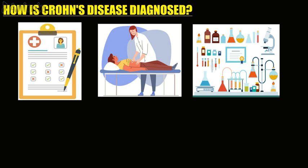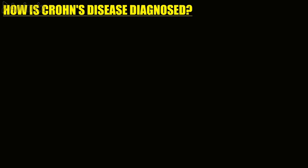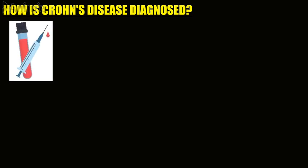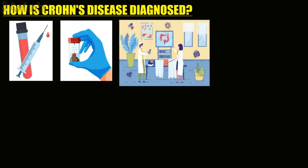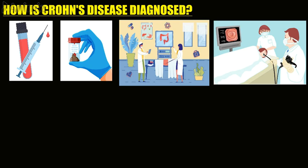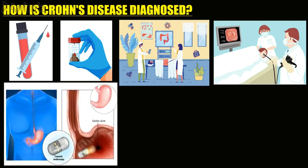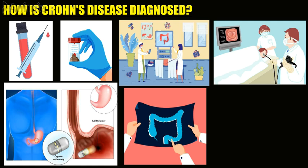During a physical exam, a physician will check for bloating, swelling, and painful or tender spots in your abdomen. Additional tests are often needed to diagnose Crohn's disease and may include blood tests, stool tests, colonoscopy, upper GI gastrointestinal endoscopy, wireless capsule endoscopy, and imaging tests like X-rays and CT scans.